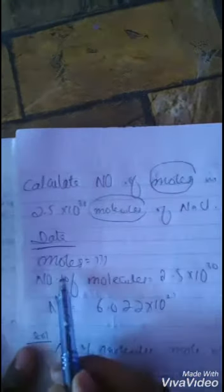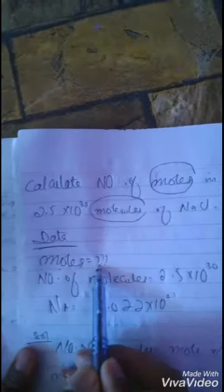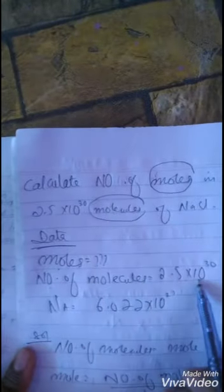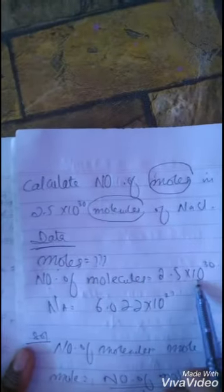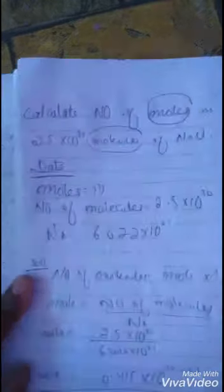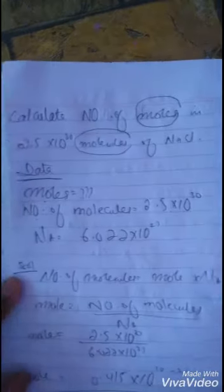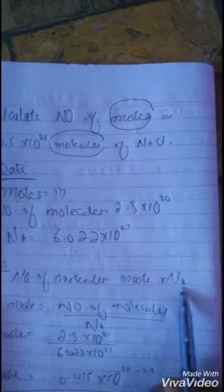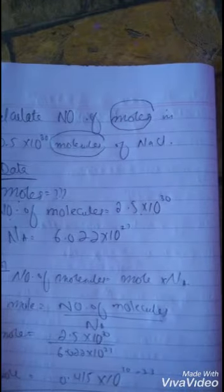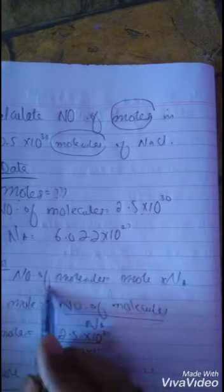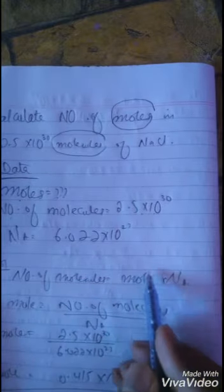Let's make a data. We have to calculate number of moles. We are given 2.5 × 10^30. Avogadro's number is constant. Write the formula of Avogadro: number of molecules is equal to moles multiplied by Avogadro's number, according to the need of the question. Arrange the formula.